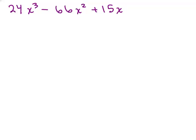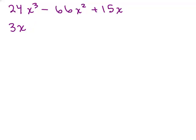Here's our next example. You see a 24 and a 15 — you might be tempted to just start. But there's a problem: this is harder to factor if there's a common factor you could take out first. Before trying this method, look at the entire polynomial and pull out the greatest common factor. The biggest thing that goes into 24, 66, and 15 is 3, and there's also a factor of x everywhere. So first factor out 3x, which gives you 8x squared minus 22x plus 5.